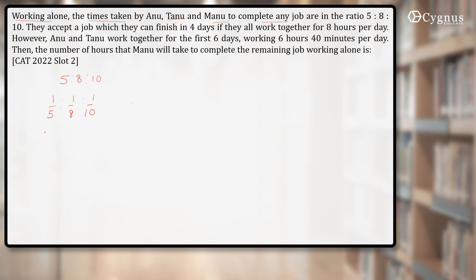When you multiply it by 40, this becomes 8:5:4. Let's assume that this is the work done by all three of them individually in one hour.